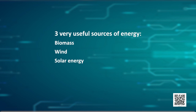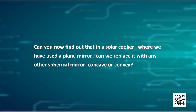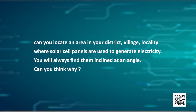So dear children, we are now aware of three useful sources of energy: biomass, wind, and solar energy. We know the advantages and disadvantages. Can you find out whether in a solar cooker, where we have used a plain mirror, we can replace it with any other spherical mirror — concave or convex? Also, if possible, can you locate an area in your district, village, or locality where solar cell panels are used to generate electricity? You will always find them inclined at an angle — can you think why? Till next time, keep practicing and keep questioning. Namaste.